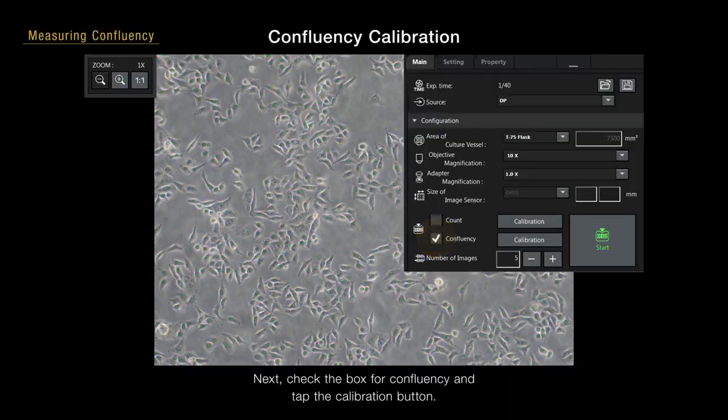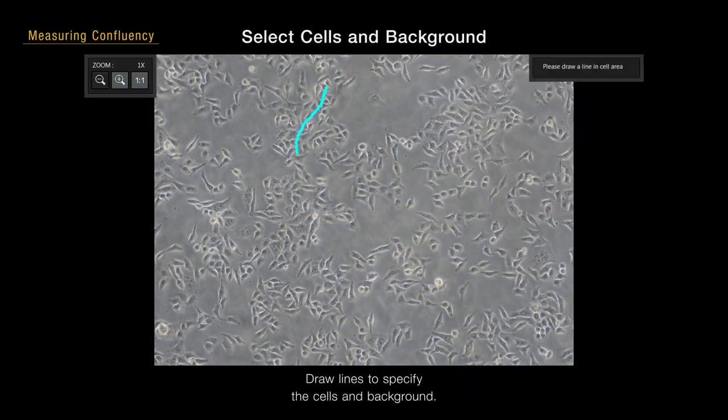Next, check the box for confluency and tap the calibration button. Draw lines to specify the cells and background.